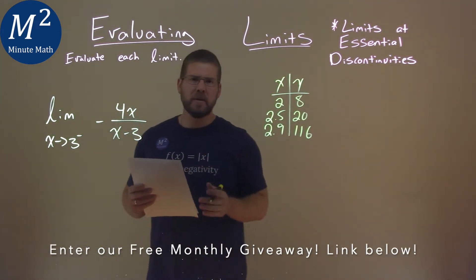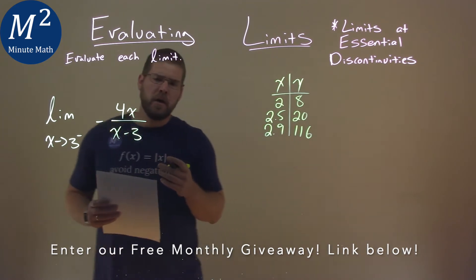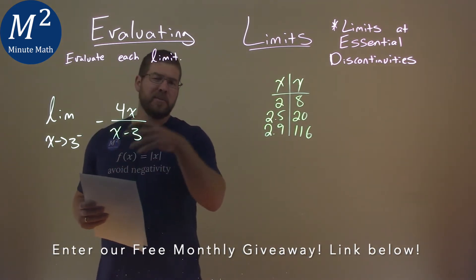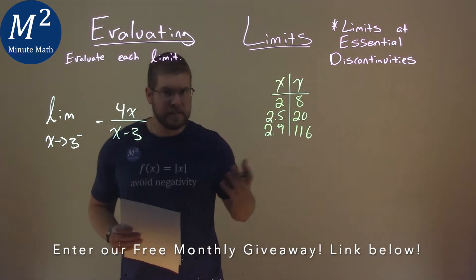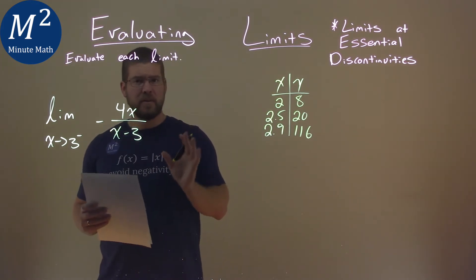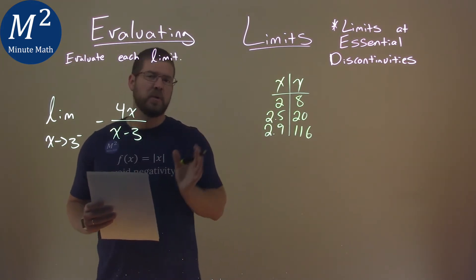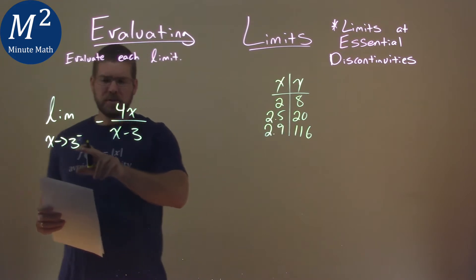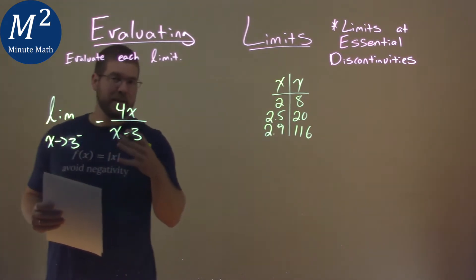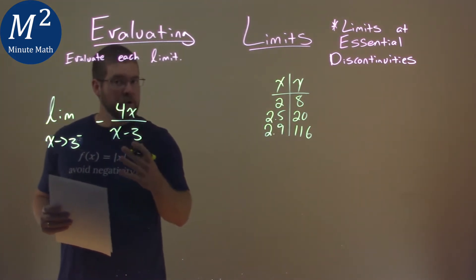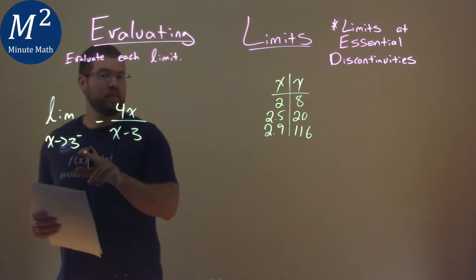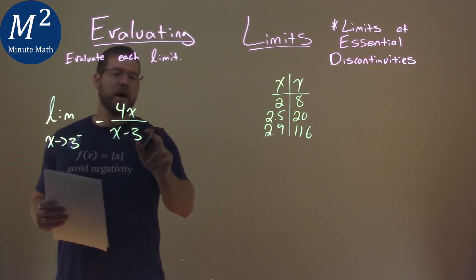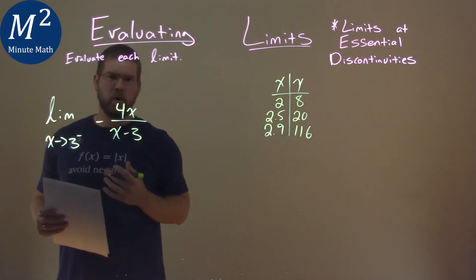But how can we understand this conceptually? Well, we know if we put in 3 directly, we're dividing by 0, and dividing by 0 is generally a clue that it's approaching some infinity. So if we're approaching from the left, I like to pick a value just to the left of 3 and see what happens — whether the overall result is positive or negative.